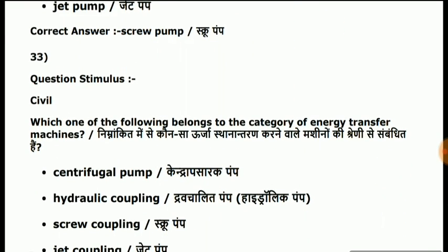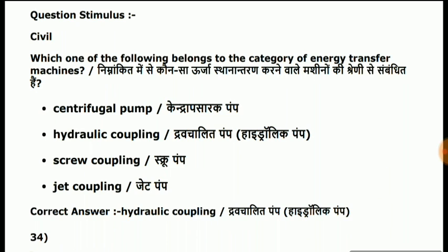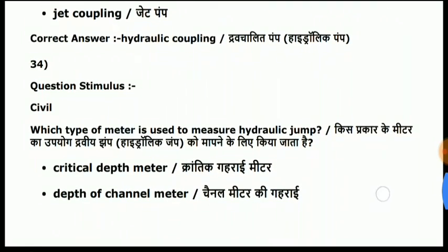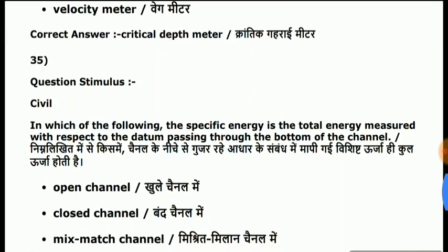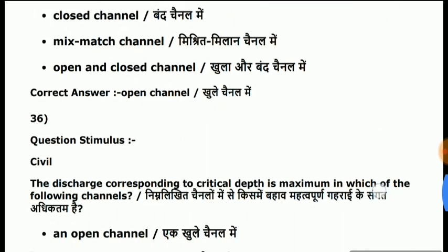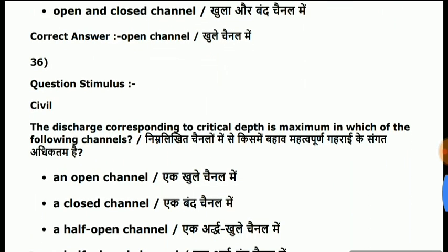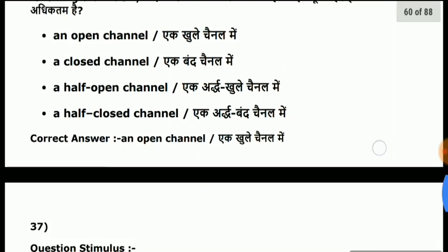Question 33: which one of the following belongs to the category of energy transfer machine? Answer is hydraulic coupling. Question 34: which type of meter is used to measure hydraulic jump? Answer is critical depth meter. Question 35: in which of the following is the specific energy the total energy measured with respect to the datum passing through the bottom of the channel? Answer is open channel only. Question 36: the discharge corresponding to critical depth is maximum in which channel? Answer is open channel.